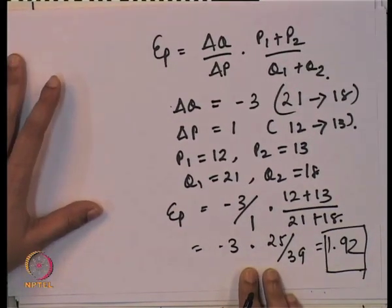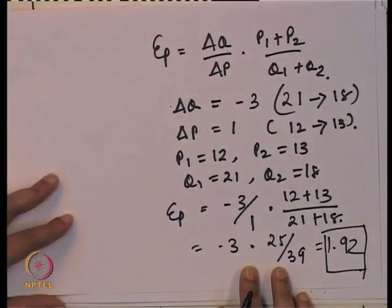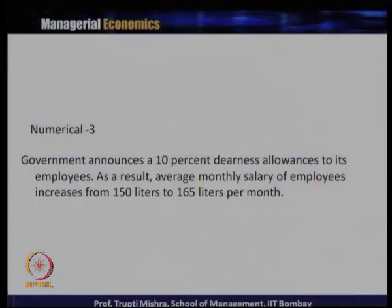Since the elasticity is greater than 1, the percentage change in quantity demanded is greater than the percentage change in price. This generally happens in the case of elastic goods, where any small change in price leads to a greater change in quantity demanded. Now we will take a numerical in the case of income elasticity of demand.